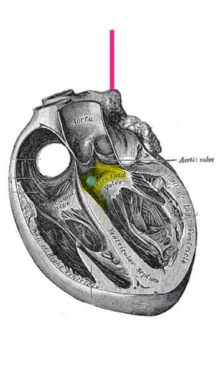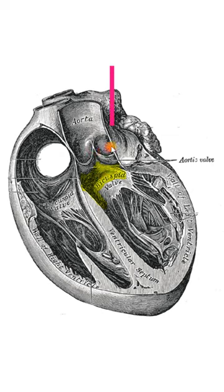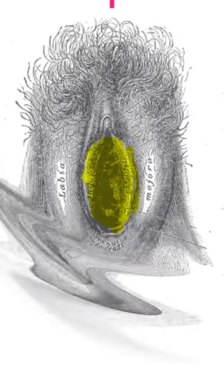In the heart, the aortic vestibule is the outflow tract of the left ventricle and is located just below the aortic valve.